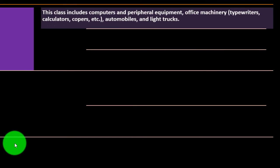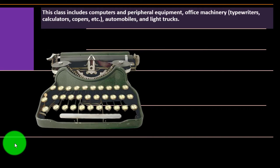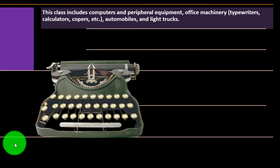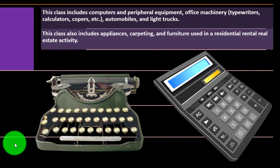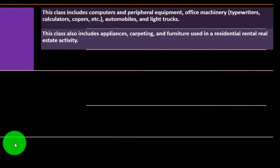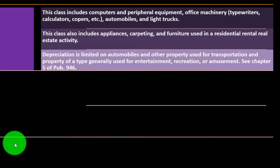Five-year property includes computers and peripheral equipment, office machines, typewriters, calculators, copiers, automobiles, and light trucks. This class also includes appliances, carpeting, and furniture used in a residential rental real estate activity. Depreciation is limited on automobiles and other property used for transportation, and property generally used for entertainment, recreation, or amusement.